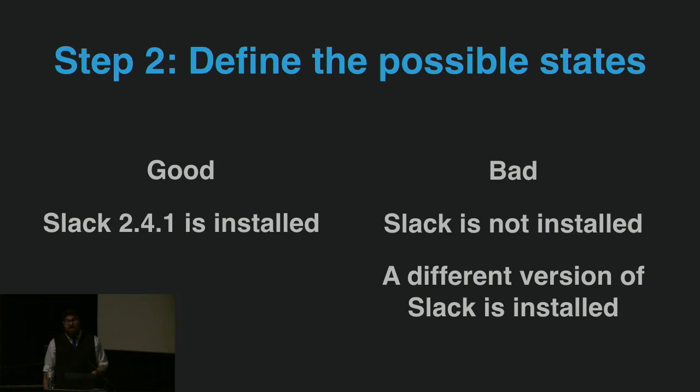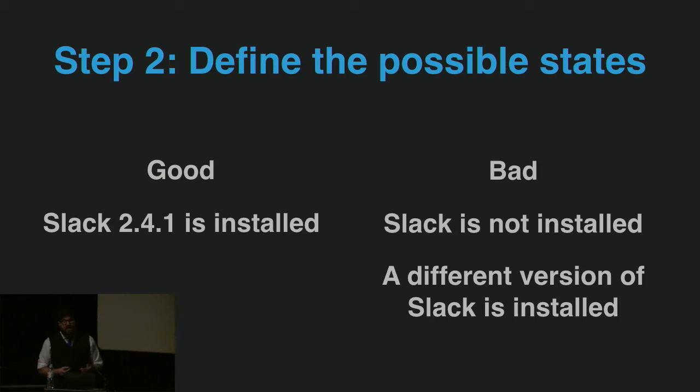Next, think about the possible states the computer could be in. There are really three: Slack 2.4.1 is installed — that's good, we don't need to do anything. Slack is not installed at all — obviously that doesn't meet our criteria. Or a different version of Slack is installed — that also doesn't meet our criteria. So now we want to find computers that don't meet our desired state.